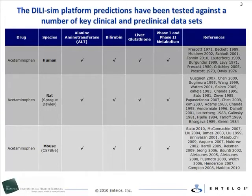DILI-SIM platform predictions have been tested against a number of key clinical and preclinical datasets, such as those listed here for acetaminophen. Virtual patients, virtual rats, and virtual mice in the DILI-SIM platform have appropriate changes in circulating markers of hepatocellular death and dysfunction, such as ALT and bilirubin, in addition to those representing the intracellular processes following acetaminophen dosing. The intracellular processes include hepatocyte glutathione levels and compound biotransformation via the classic drug metabolism pathways. Similar validation with additional drugs such as isoniazid and valproic acid is planned as development of the platform continues.